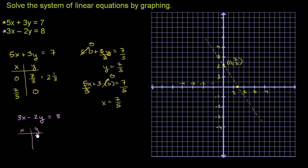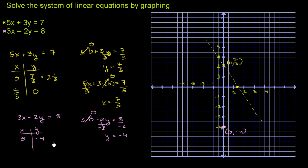We'll look at the x and y-intercepts for this equation too. For the y-intercept, when x is equal to 0, we get 3 times 0 minus 2y equals 8, so negative 2y equals 8. Divide both sides by negative 2 and y equals negative 4 — so the y-intercept is (0, negative 4). For the x-intercept, setting y equal to 0 gives 3x equals 8, so x equals 8 thirds, which is 2 and 2 thirds.